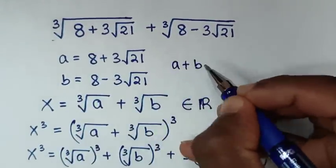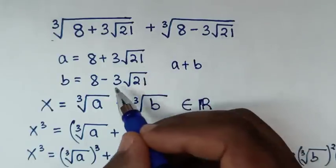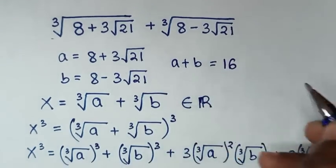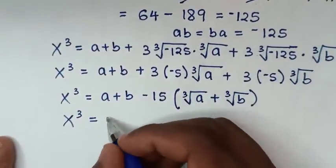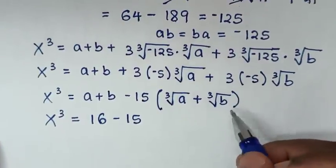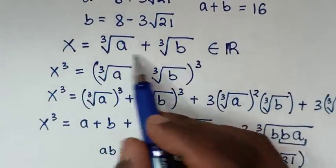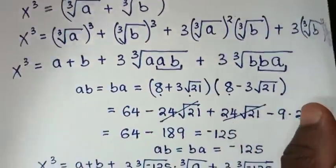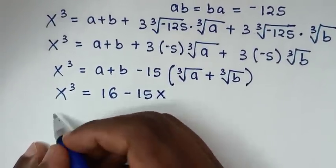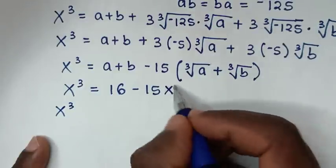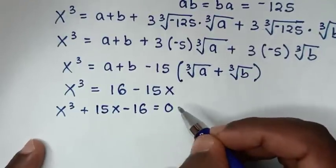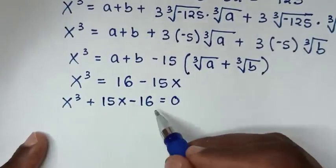Now substituting back: a plus b — here a is 8 plus 3√21 and b is 8 minus 3√21, so 3√21 minus 3√21 equals 0, giving a plus b equals 8 plus 8 equals 16. We substitute a plus b equals 16, then minus 15 times (cube root of a plus cube root of b). Since cube root of a plus cube root of b equals x, we substitute x. Moving terms to the left side: x³ plus 15x minus 16 equals 0.